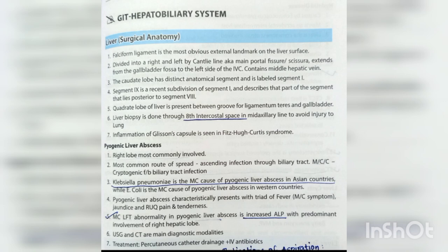Pyogenic liver abscess: the right lobe is most commonly involved. The most common route of spread is ascending infection through the biliary tract. The most common cause is cryptogenic, followed by biliary tract infection. Klebsiella pneumoniae is the most common cause in Asian countries, while E. coli is the most common cause in Western countries. It characteristically presents with a triad of fever, jaundice, and right upper quadrant pain and tenderness. The most common LFT abnormality is increased ALP. USG and CT are the main diagnostic modalities.